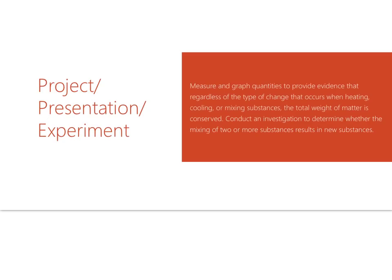After you have fully mastered this topic, you should be able to create a project or presentation — an experiment would be really fun for this one. You should be able to measure and graph quantities to provide evidence that regardless of the type of change that occurs when heating, cooling, or mixing substances, the total weight of matter is conserved. Conduct an investigation to determine whether the mixing of two or more substances results in new substances.